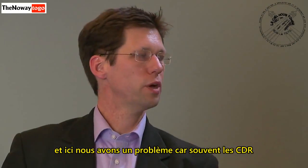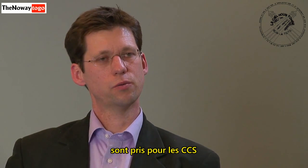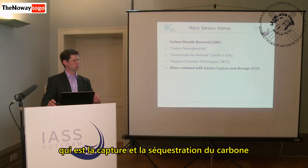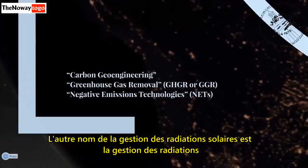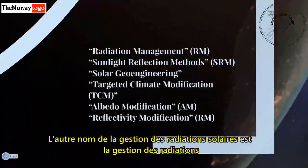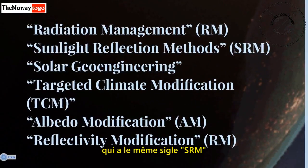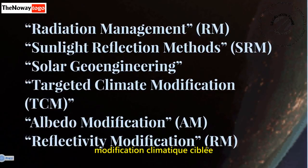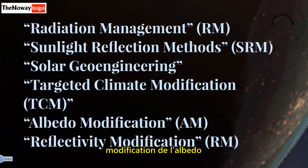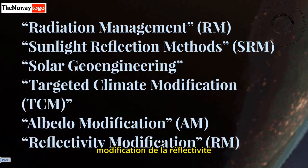Here we have the problem that CDR is often confused with CCS — carbon capture and sequestration. Other names for solar radiation management include radiation management, sunlight reflection methods — with the same abbreviation SRM — solar geoengineering, targeted climate modification, albedo modification, or reflectivity modification.